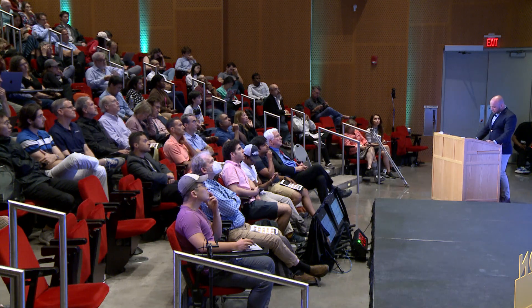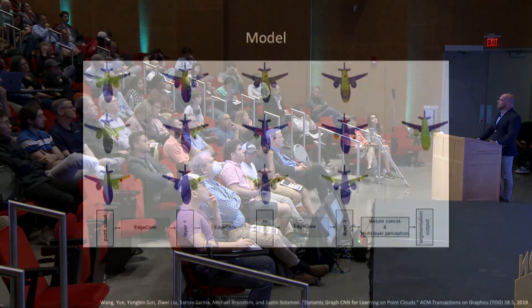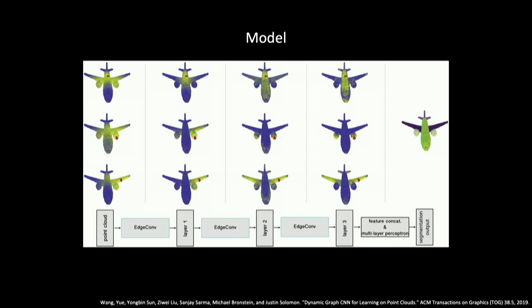Even after we settle on a shape representation and find a way to input a shape, next we must map that shape to a meaningful output. One option is to adapt successful methods intended for other types of data, such as convolutional neural networks for images. But we can also devise specialized models for shape. For example, one model designed by my former PhD student, Yue Wang, passes information around between nearby points on a shape, and as information flows between these points, the model kind of comes to a consensus.